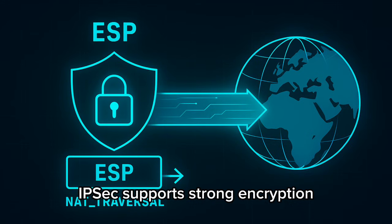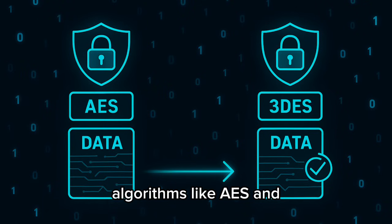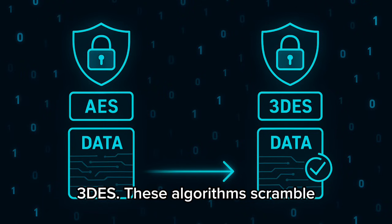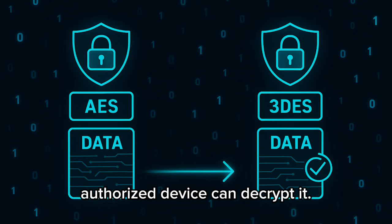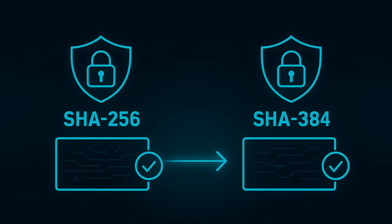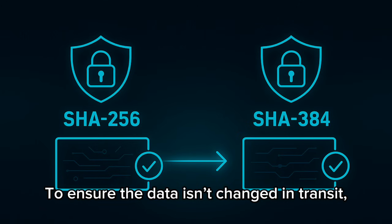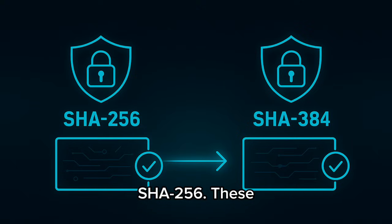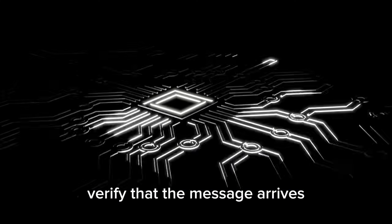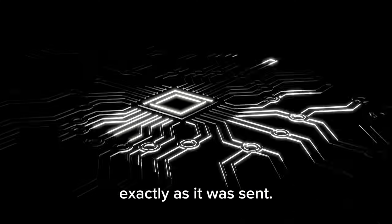IPsec supports strong encryption algorithms like AES and 3DES. These algorithms scramble your data so only an authorized device can decrypt it. To ensure the data isn't changed in transit, IPsec uses hashing algorithms like SHA-256. These verify that the message arrives exactly as it was sent.